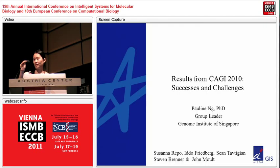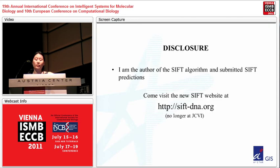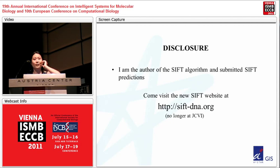I'm going to talk about how the amino acid substitution prediction algorithms worked in KG. A disclosure: I am the author of the SIFT algorithm, and I was also a submitter as well as an assessor. I am no longer at JCVI or FHCRC, where I wrote the algorithm. If you are using SIFT or want to compare SIFT, the new algorithm is just being hosted at a new website, sift-cna.org.